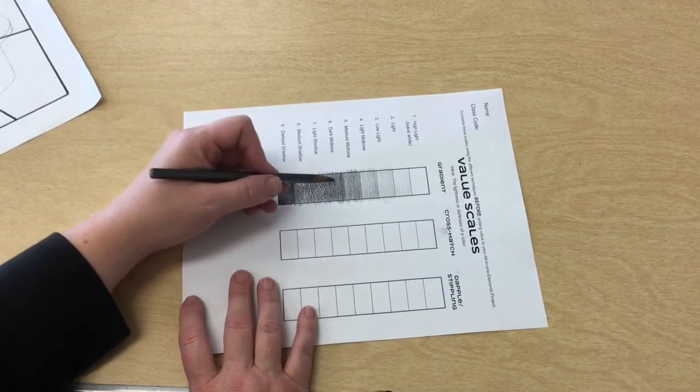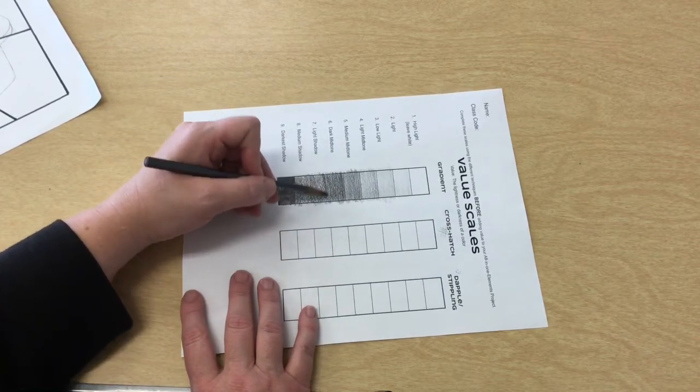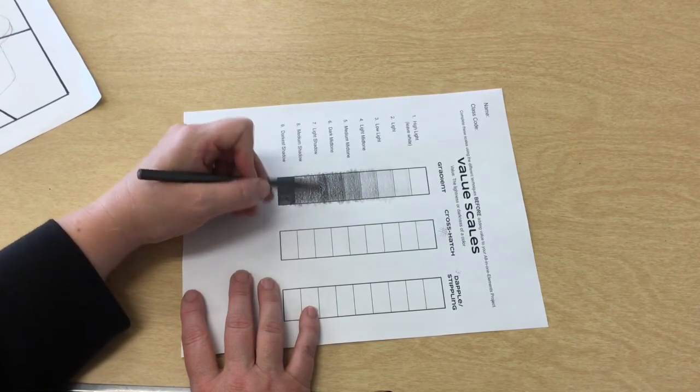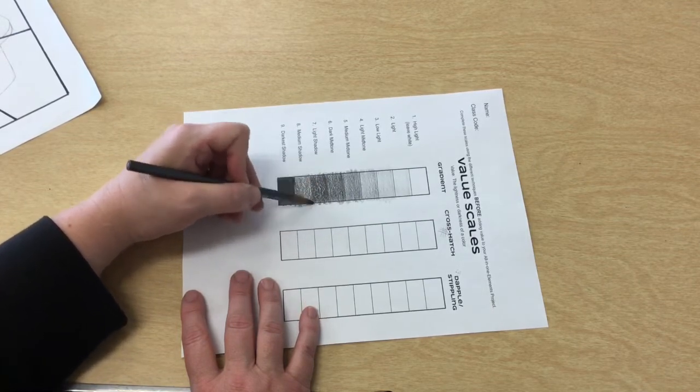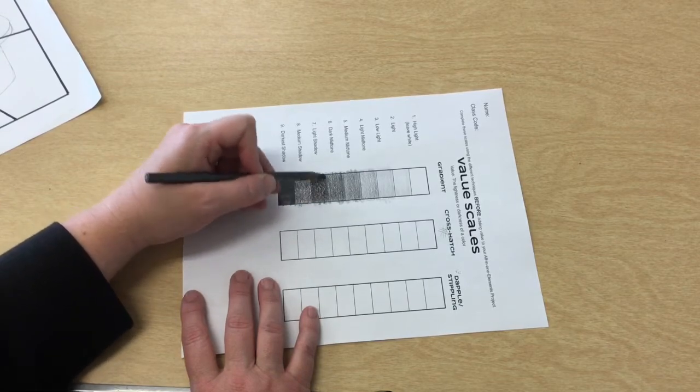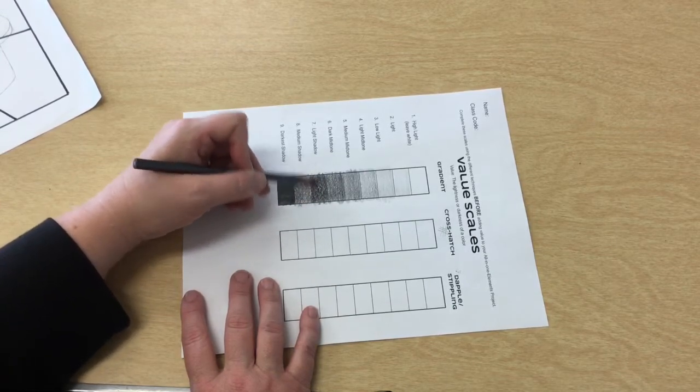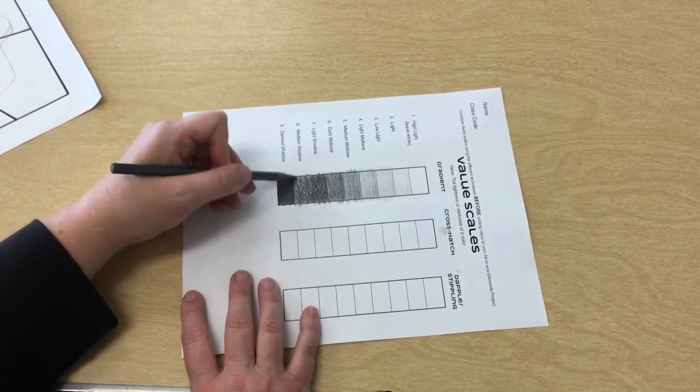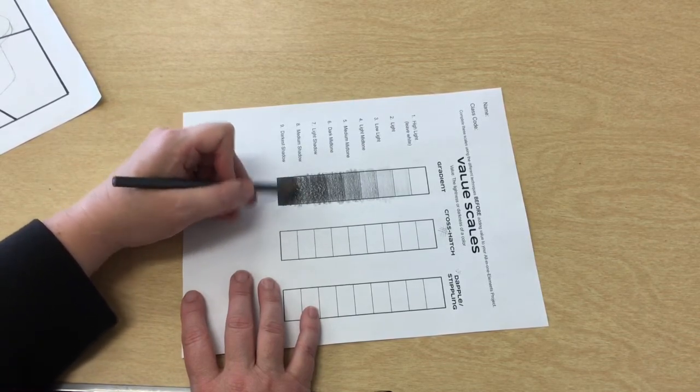Now I'm down to two more spots. I'm going to press a little bit harder to make sure I can see a change here. And then the final one. Not quite as dark as possible but pretty close.